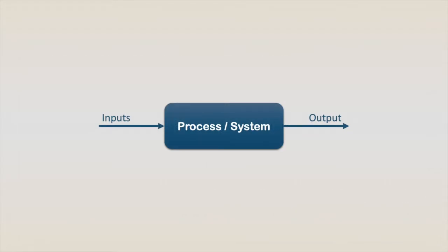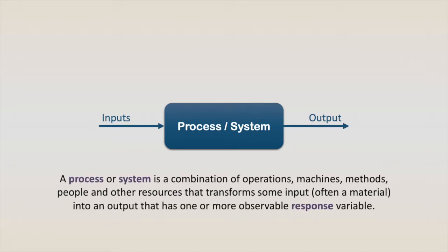In general, experiments are used to study the performance of processes and systems. A process or system is a combination of operations, machines, methods, people, and other resources that transform some inputs, often a material, into an output that has one or more observable response variables.